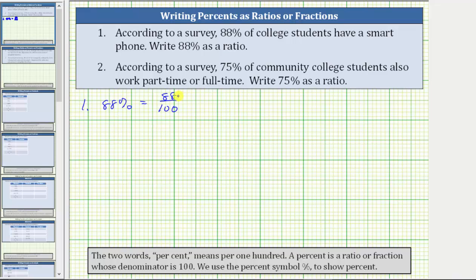As a fraction, we can say 88 hundredths of the college students have a smartphone, or as a ratio, we can say 88 out of 100 college students have a smartphone.